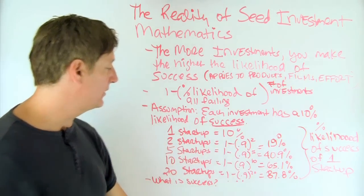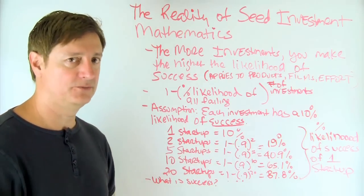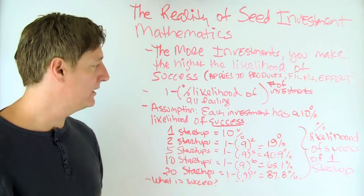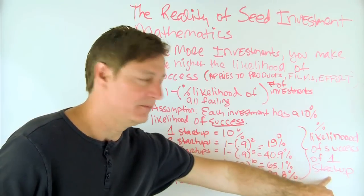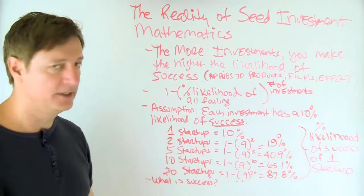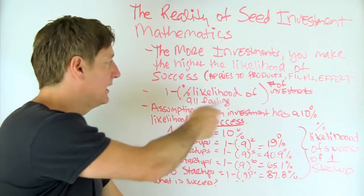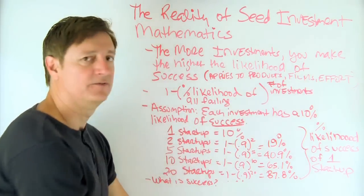But you can still play with the statistics to understand the seed mathematics involved and how important numbers are. If you do two startups, if you fund two startups, two products, two films, then your likelihood of success of at least one of them being successful ends up being 19% because you're just plugging in this formula, 1 minus percent likelihood of all failing to the number of investments.